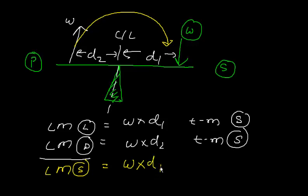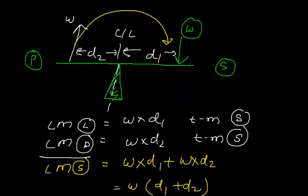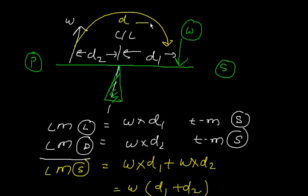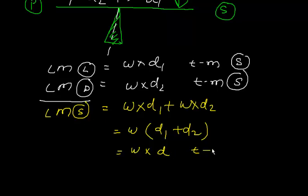Shifting is a combination of discharge and load. So if we shift something from one point to another, the list moment of shifting is the combination of both, and both are towards starboard. So we add them together: W × D1 plus W × D2. Taking W as common gives W × (D1 + D2), where D1 + D2 is the total distance shifted. So the list moment for shifting is W × total distance, and the direction is towards starboard.